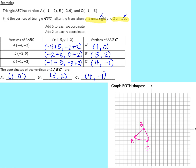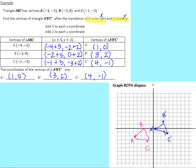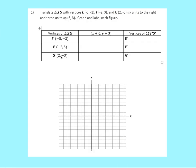Now sketch triangle A'B'C' in a different color. A' is at (1, 0), B' is at (3, 2), and C' is at (4, −1). Connect those dots. You can see that you took that shape and just slid that triangle over — the size didn't change, just the position moved. The triangles are the same size. After you graph your translation, double check: do my triangles look the same as what I started with? If yes, you're good.